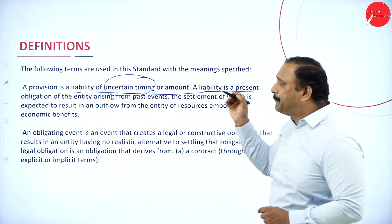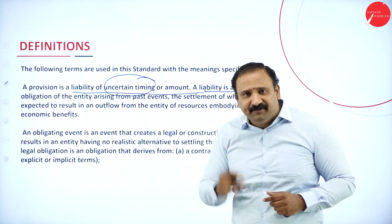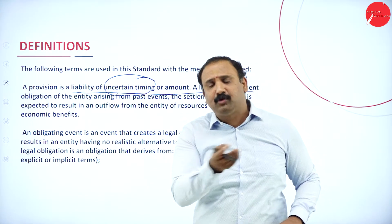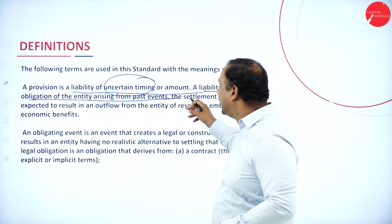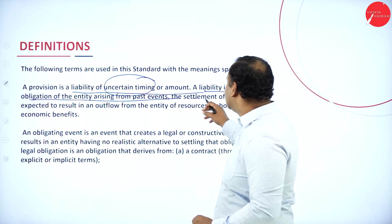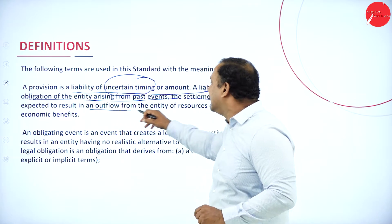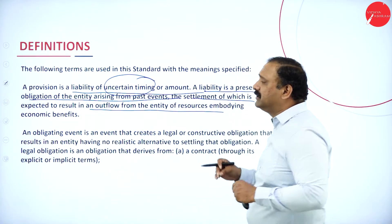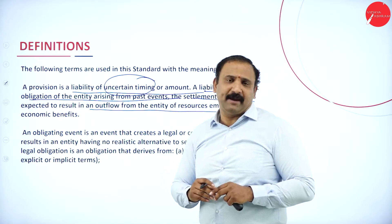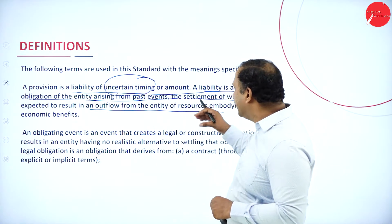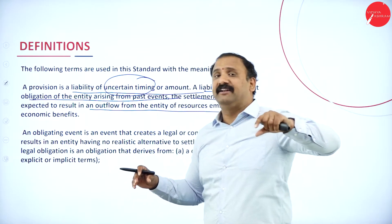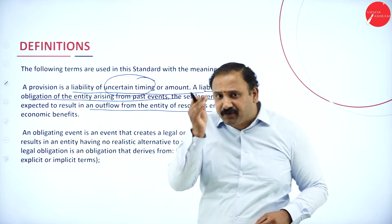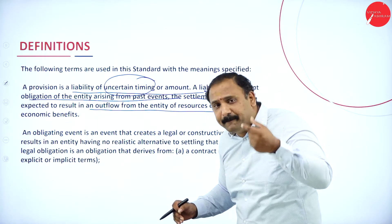A liability is a present obligation. When I say I have a liability, that means I currently have it — for example, an outstanding loan means the loan is present right now and I have to manage my EMI. So this becomes an obligation of the entity arising from past events, the settlement of which is expected to result in an outflow of resources embodying economic benefits.